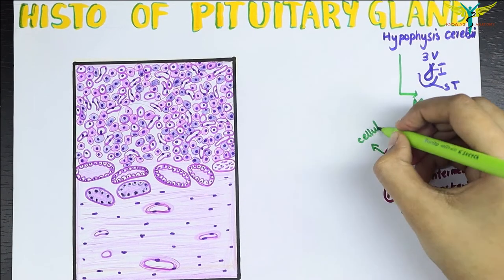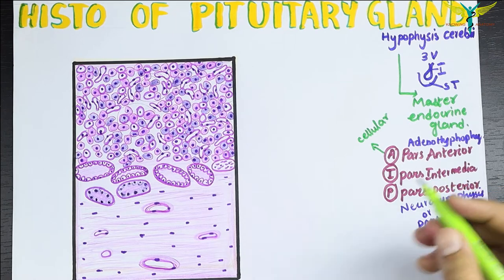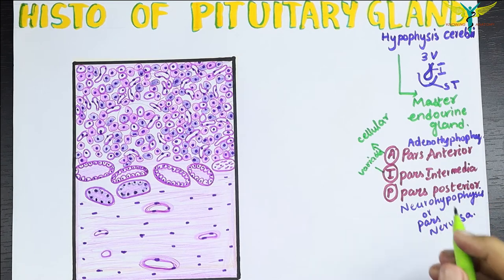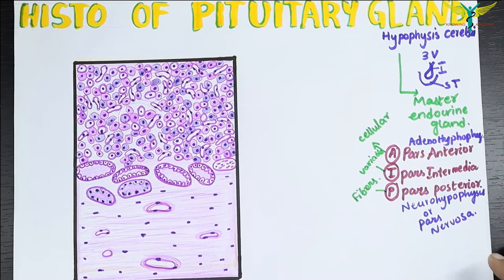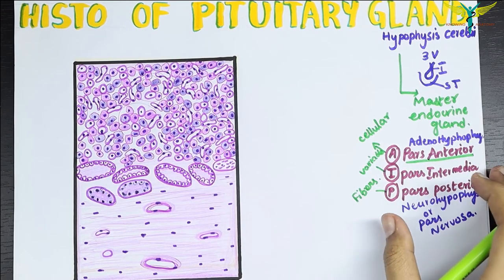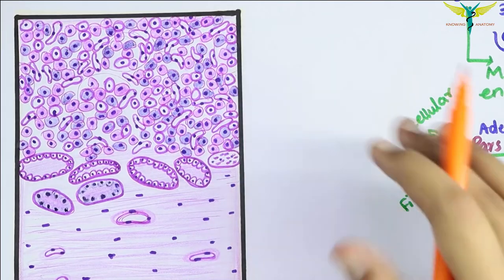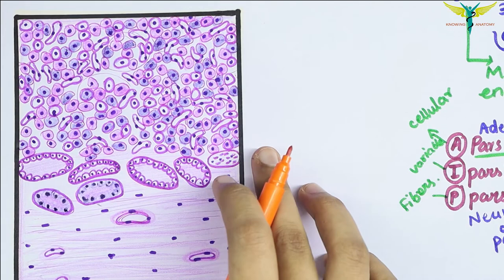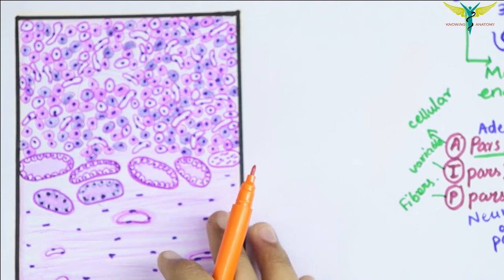Remember: the pars anterior is very cellular, the pars intermedia is variable in structure, and the pars posterior consists of fibers and is lightly stained. Now let's talk about the pars anterior first, as it is the first division of the pituitary gland.